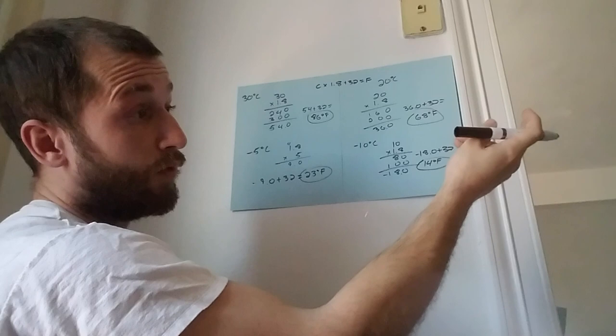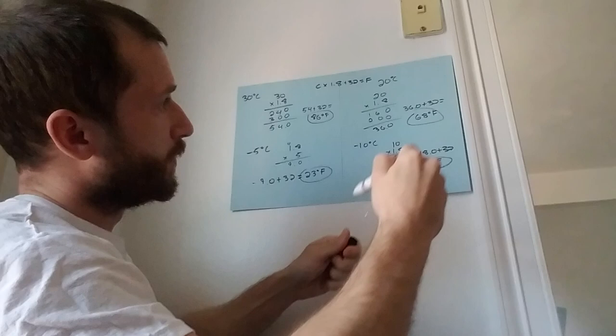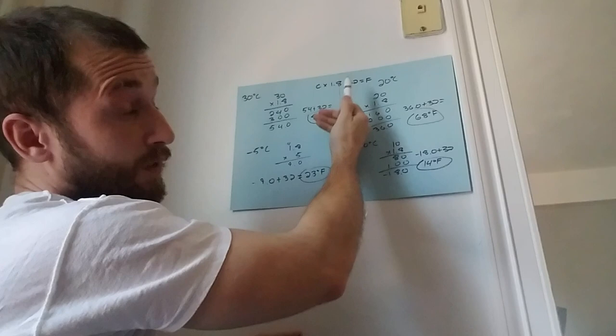But for right now, this rule always applies: plug in Celsius, multiply by 1.8, and add 32. Because of the order of operations, always add 32 last, and that's always gonna give you Fahrenheit. Easy as that, guys. Thanks!